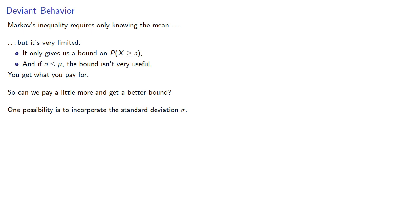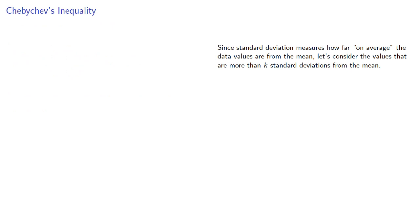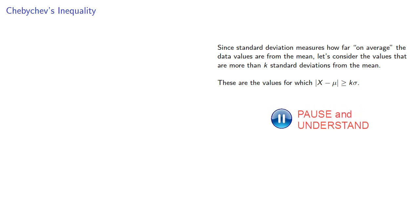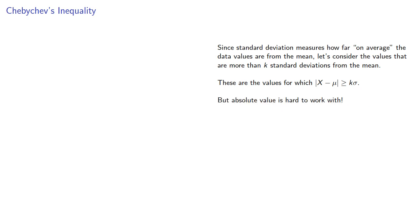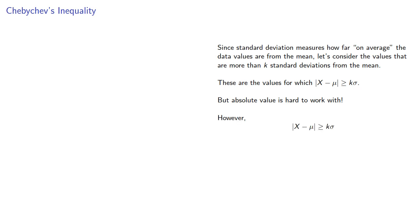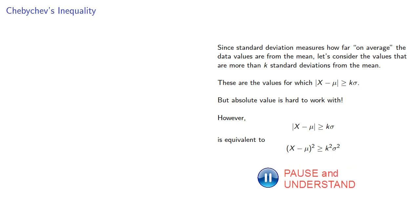One possibility is to incorporate the standard deviation sigma. Since standard deviation measures how far on average the data values are from the mean, let's consider the values that are more than k standard deviations from the mean — these are the values for which the absolute value of x minus mu is greater than or equal to k sigma. An absolute value is hard to work with; however, it is equivalent to the square of x minus mu being greater than or equal to k squared sigma squared. Consequently, the probability of the two events is the same.